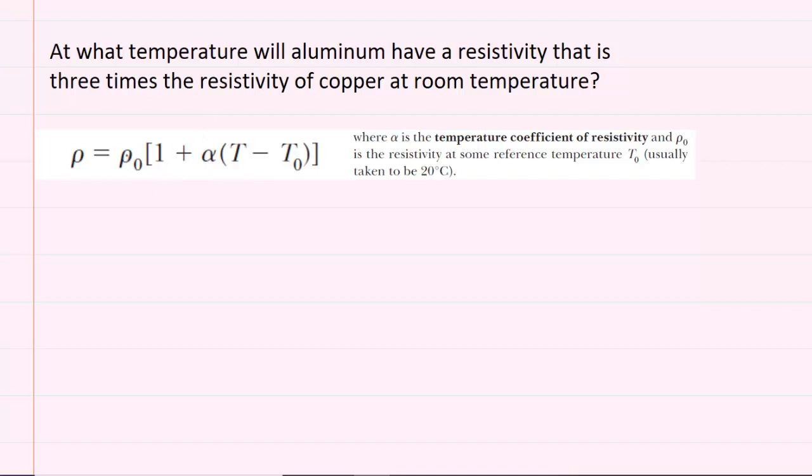Now this Greek letter rho with a subscript zero is the resistivity at some reference temperature, so we've written that down on the side here. The T with a subscript zero is the reference temperature, which is usually taken to be 20 degrees Celsius.